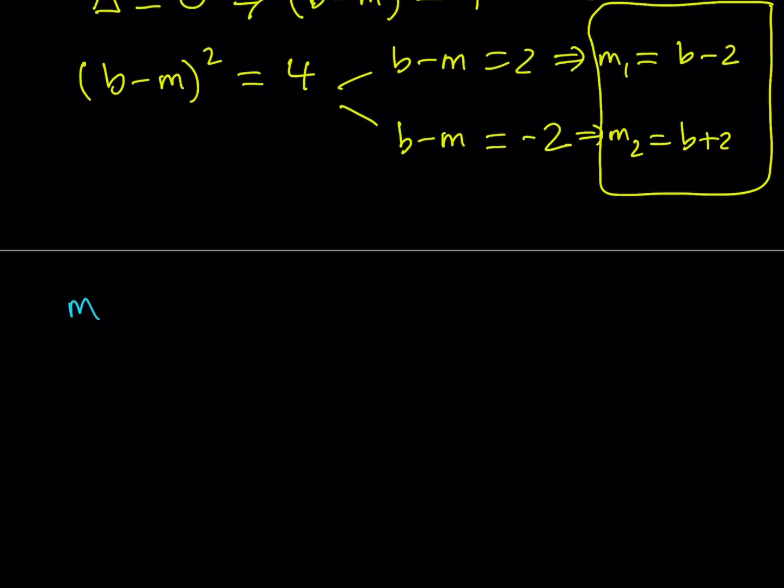So I'm going to multiply m1 times m2. That should equal negative 1 because the lines are perpendicular. And m1 is equal to b minus 2 and m2 is equal to b plus 2. And their product is equal to negative 1. But this is the difference of two squares. So from here, I get b squared minus 4 equals negative 1. Adding 4 to both sides, I get b squared equals 3. And from here, I do get two b values.